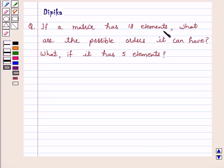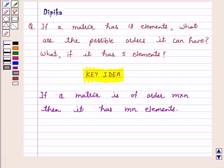If a matrix has 18 elements, what are the possible orders it can have? What if it has 5 elements? We know that if a matrix is of order m by n, then it has mn elements.